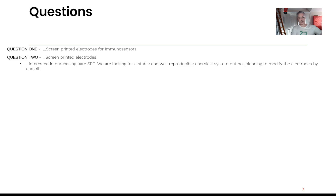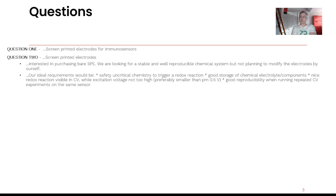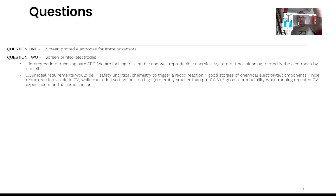Question number two: somebody is interested in screen-printed electrodes that are stable and reproducible. They're looking for something that causes a redox reaction but not higher than 0.5 volts, and they want good reproducibility — specifically on the same sensor. But reproducibility on the same sensor depends on the sensor itself, on the solution, and on the assay.